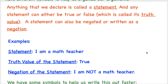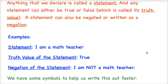Here's an example. One statement I can make is: I am a math teacher. The truth value of that statement is that it's true. The negation of that statement is to write it negatively: I am not a math teacher. So those are examples of a statement, the truth value, and negation. We have some symbols to write this out faster — I don't want to always write out the full words. So we're going to have some symbols.